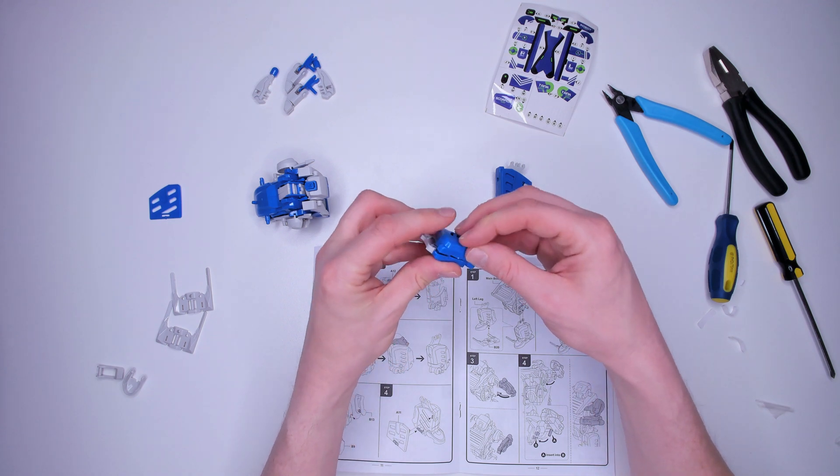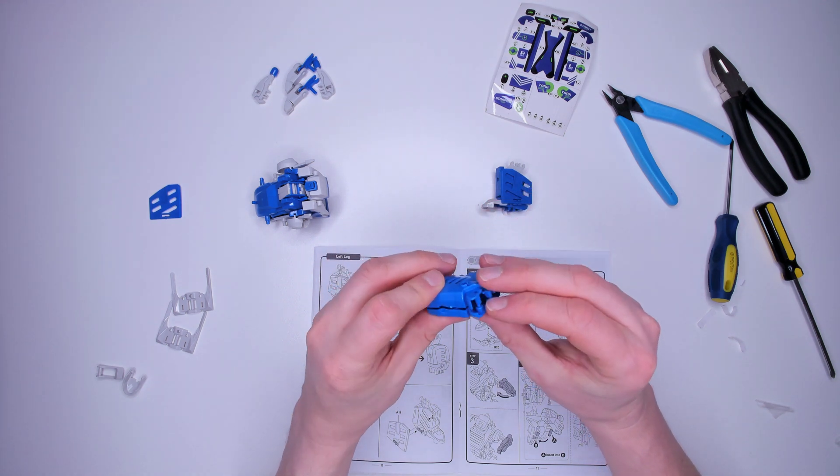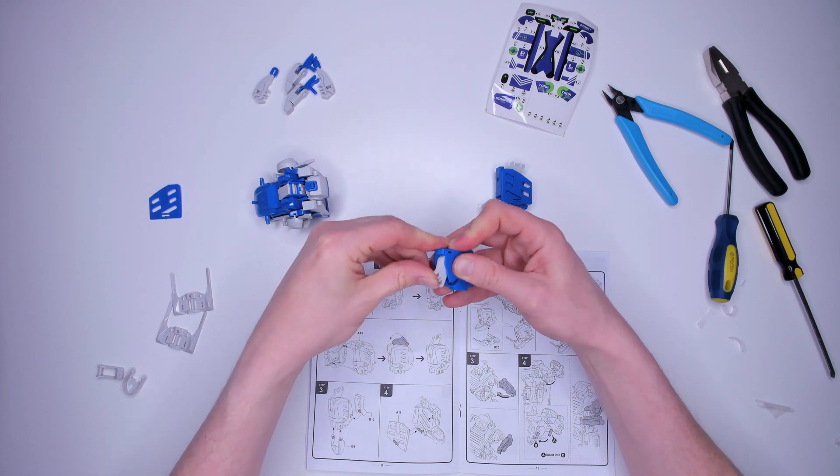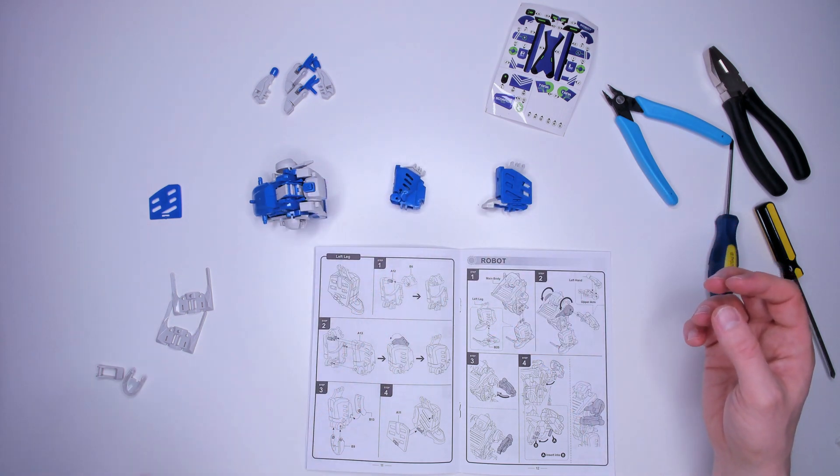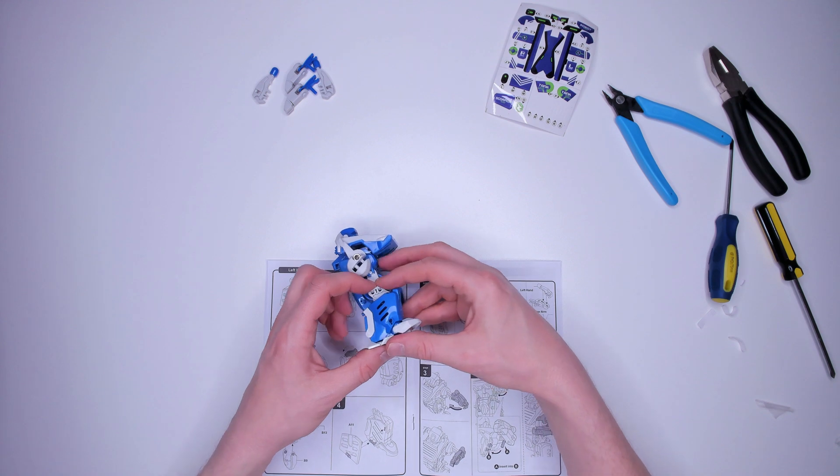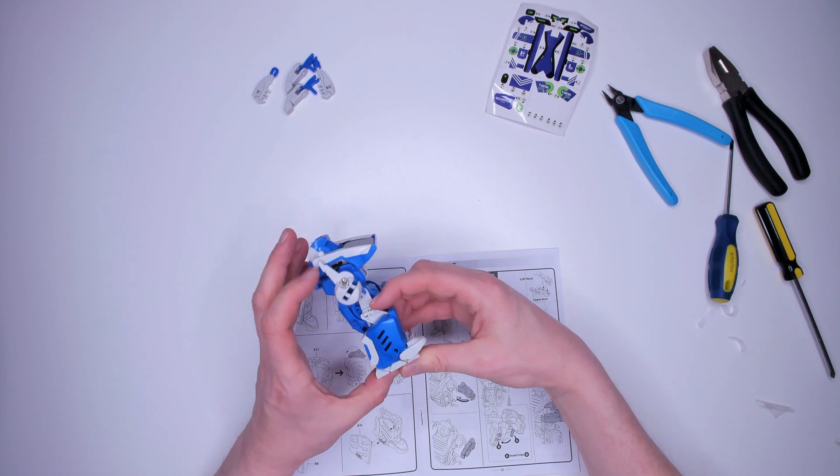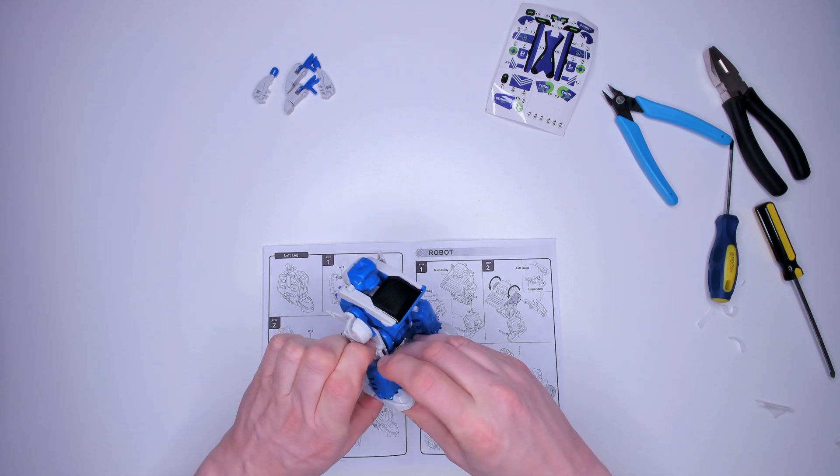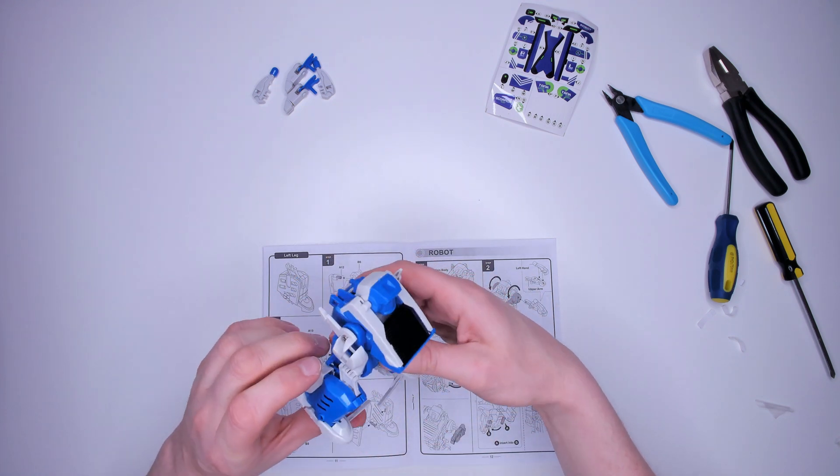At last, the legs and feet. Kind of essential for a walking robot. There, two legs and feet created. The legs attach at the bottom of the robot, obviously. And it's important to get the left and the right leg the right way round.